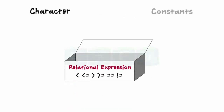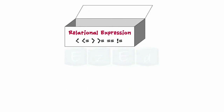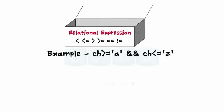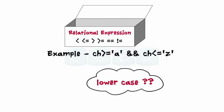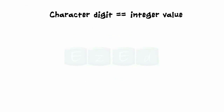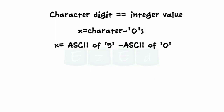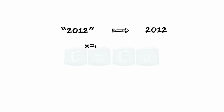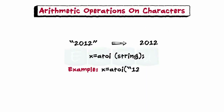We may use character constants in relational expressions — for example, to test whether characters are in lowercase. We can convert a character digit to an equivalent integer value using a specific relationship. If the character contains the digit 5, then the ASCII value of '5' is 53 and that of '0' is 48, so the result is 5. C library also supports a function to convert a string of digits into its integer value — using this function, the string '1223' is converted into an integer value.